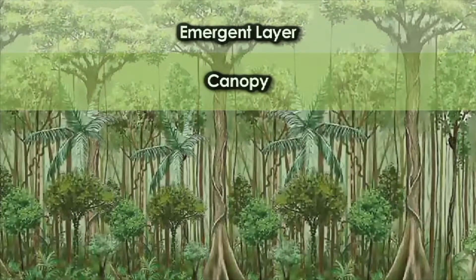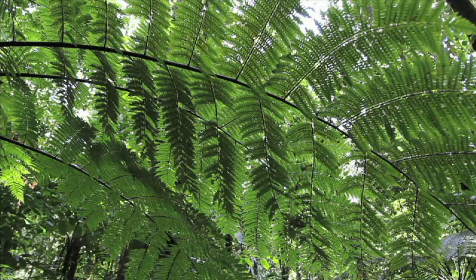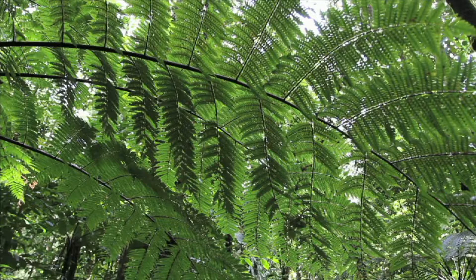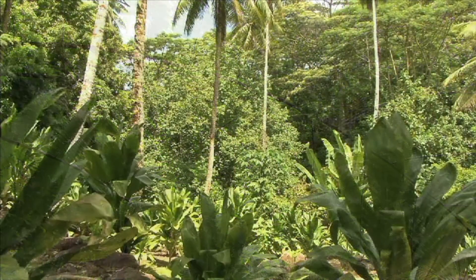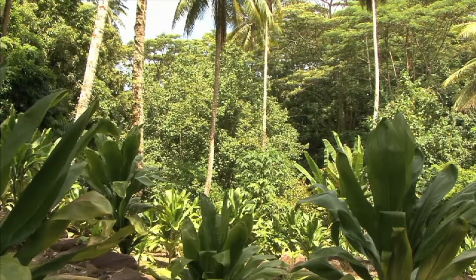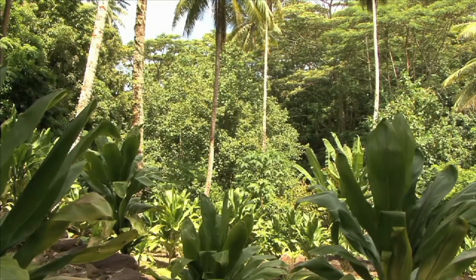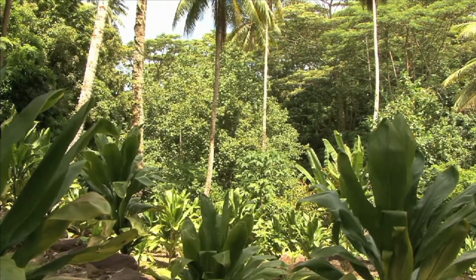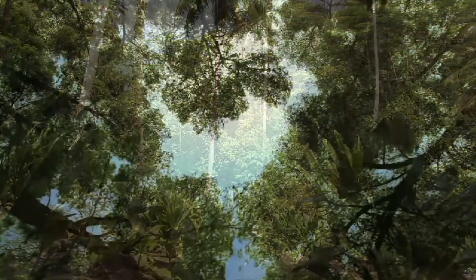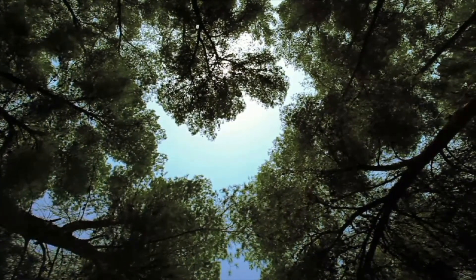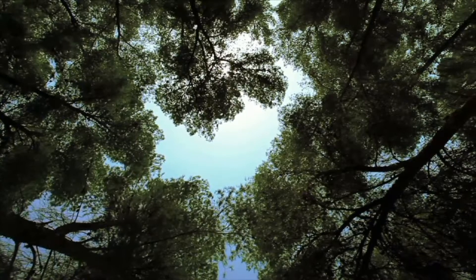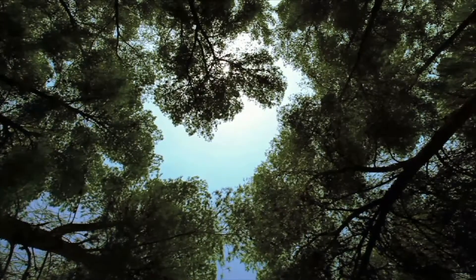The next layer down is called the canopy layer. The canopy is like a huge green roof over the forest. The trees grow up thin and straight, with few branches on the way up. Once they reach the sun, they spread out like an umbrella or canopy in the sunlight, preventing most sunlight from reaching the layers below the canopy.